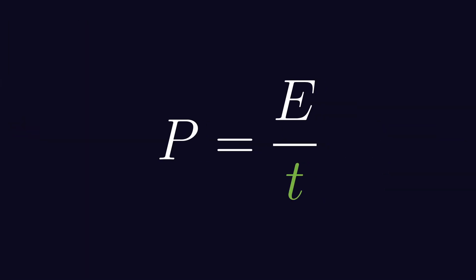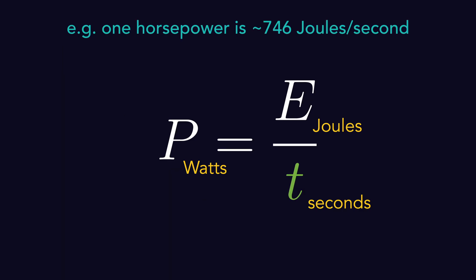Power is energy transferred over time. One watt of power is one joule of energy per second. Anything that continuously produces or converts energy, like an engine, is described by its power. We can determine the total energy transfer over a period of time by multiplying the source's power by the time period's length. Finally, since work done is the net change in energy, we rearrange terms to find that power is force times the parallel component of velocity.